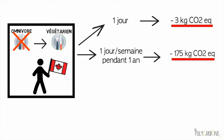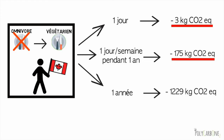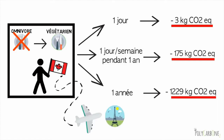Et enfin, si elle adopte ce nouveau régime alimentaire toute l'année, elle réduira ses émissions de gaz à effet de serre de 1229 kg par an, soit l'équivalent d'un aller-retour en avion pour une personne entre Montréal et Paris. Chaque geste compte et ces changements prolongés de comportement peuvent faire une réelle différence.